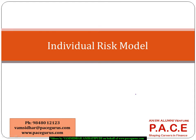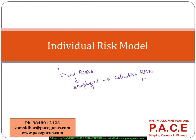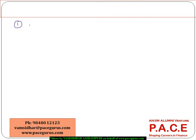Let's try to understand the individual risk model, wherein we are trying to model a portfolio consisting of a fixed number of risks. This is probably a much simplified version compared to the collective risk model, where the number of risks was not fixed. Here we make a few more assumptions: whatever these individual risks are, they are independent of each other.